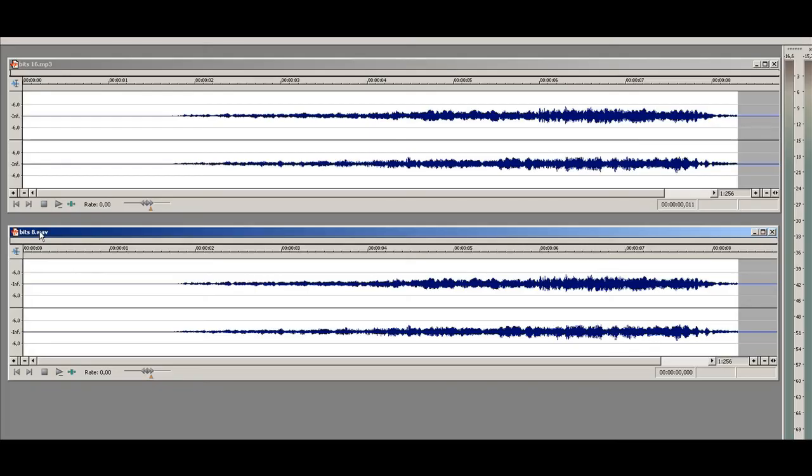In this example, you can see the difference between 16 bits and 8 bits. The first recording at 16 bits has almost no noise. In the second recording at 8 bits, you can hear a noise about minus 40 dB, a little hiss at the beginning.